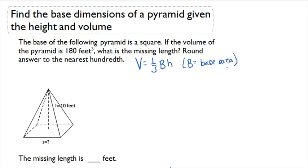Okay, let's read the problem. The base of the following pyramid is a square. If the volume of the pyramid is 180 cubic feet, what is the missing length? Round your answer to the nearest hundredth.